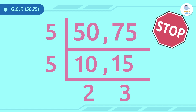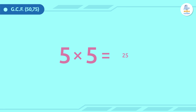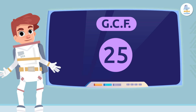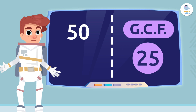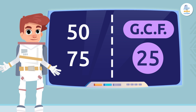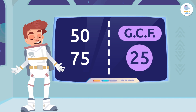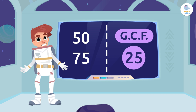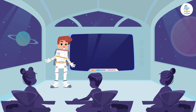From here, it's super easy to find the greatest common factor. We just have to multiply 5 times 5 to get 25. So, 25 is the greatest common factor of 50 and 75. That's all for today, friends. I hope this helps you to solve math problems in the future. We'll see you in the next class. Bye-bye!